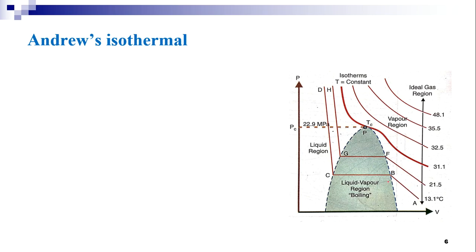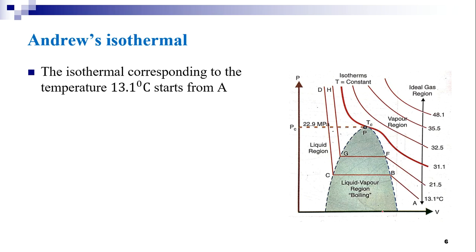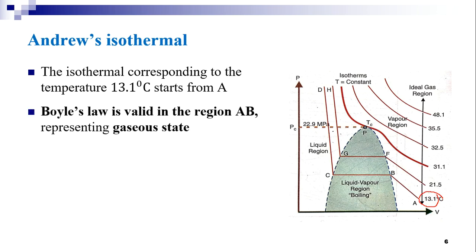At different temperatures these curves are drawn; each curve is a characteristic curve from which we can get information about the variation of volume and pressure. Looking at the isotherm corresponding to 31.1°C, the curve starts from point A. As the pressure is increased, the volume decreases till point B. Boyle's law is valid in the region AB.